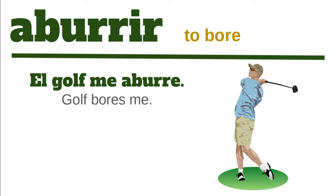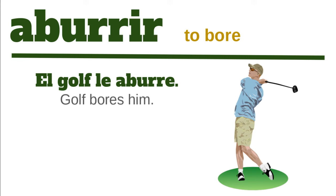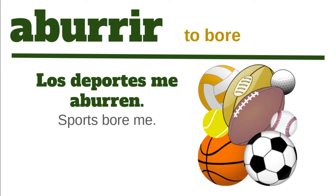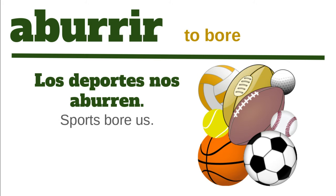For example: el golf me aburre, or me aburre el golf. El golf le aburre. And again, if we want to talk about more than one thing, all we do is add an N to the word aburre, so that it becomes aburren. Me aburren — they bore me. Te aburren — they bore you. Le aburren — they bore you in the usted form, or they bore him or her. Nos aburren — they bore us. Vos aburren — they bore you guys. Les aburren — they bore all of you, or they bore them. For example: los deportes me aburren, los deportes nos aburren.